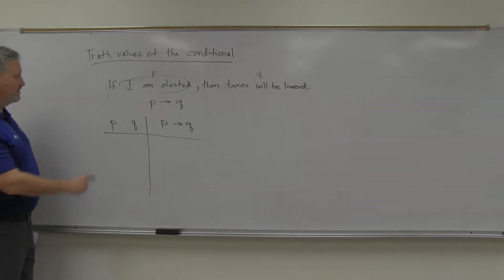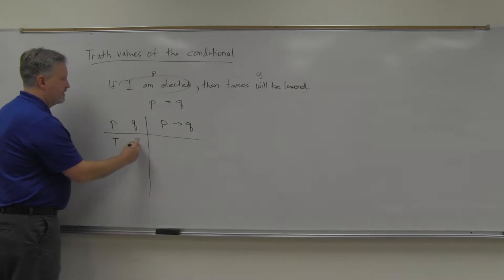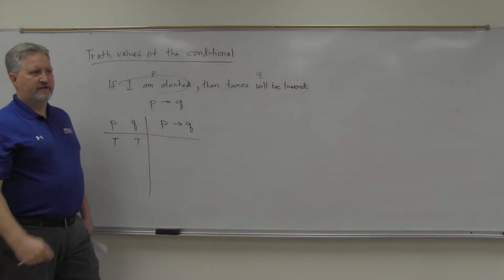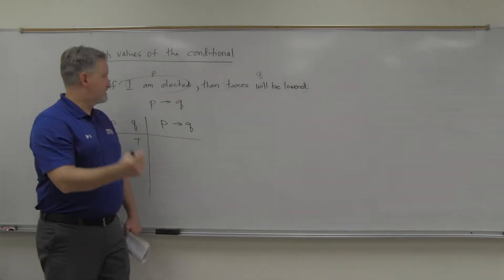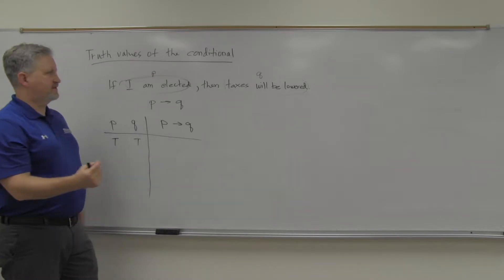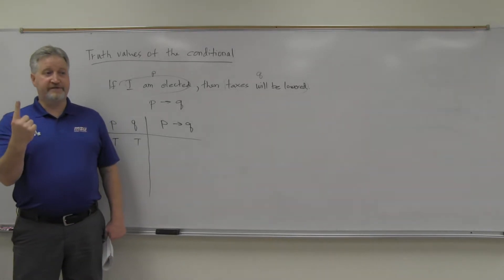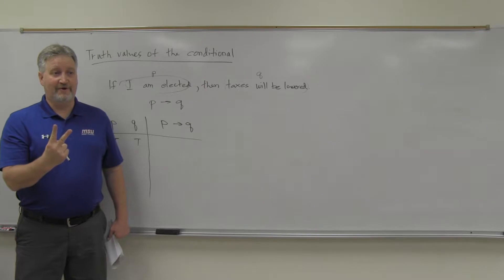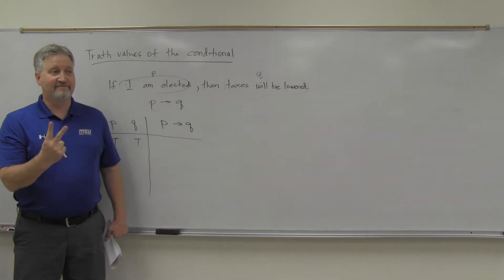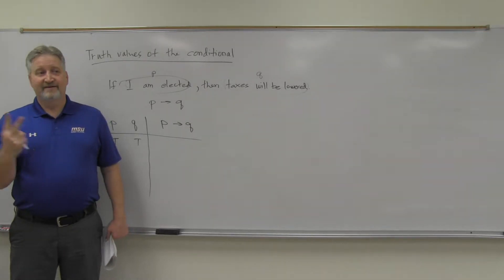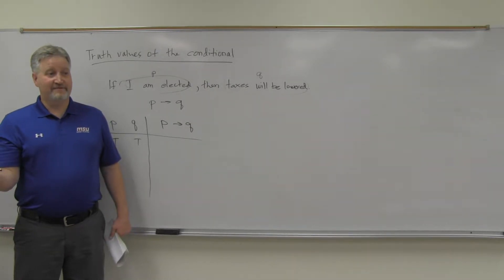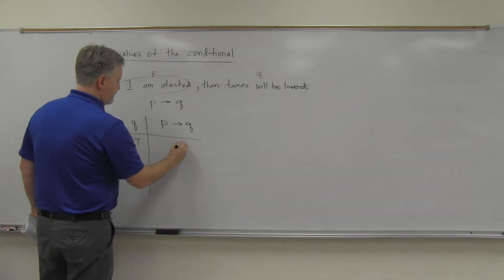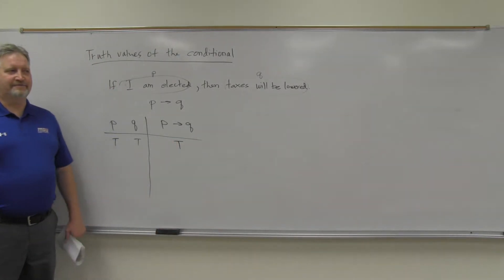The first case is true, true — so we've got true arrow true. The politician says if I'm elected, then taxes will be lowered. It's true the politician is elected, and it's true that taxes are lowered. The politician did not lie there, so that would be true.